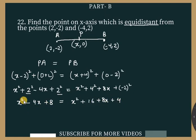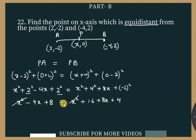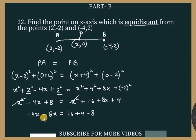We cancel x² from both sides since both are positive. Bringing x terms to the left and constants to the right: -4x - 8x = 16 + 4 - 8. This gives -12x = 12, so x = -1.